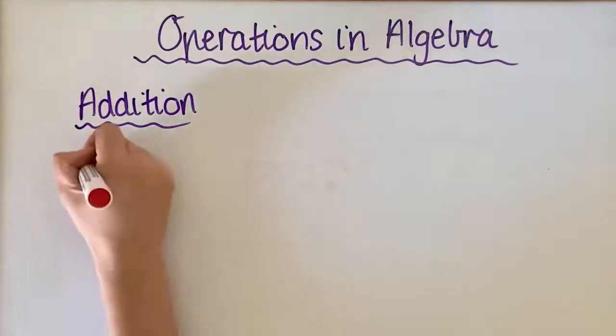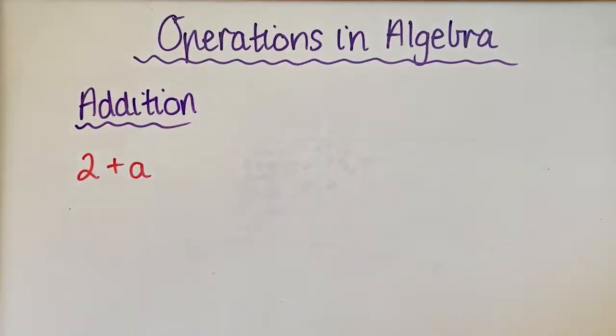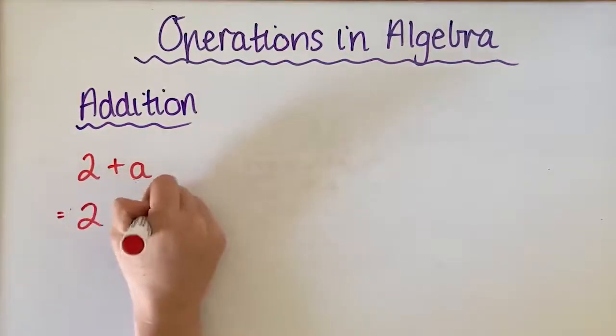So normally you might have something like this. So if you were to think of 2 plus A, well, in algebra, you would still write it as 2 plus A. We keep the plus sign or the addition sign.